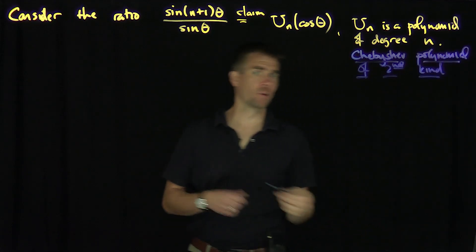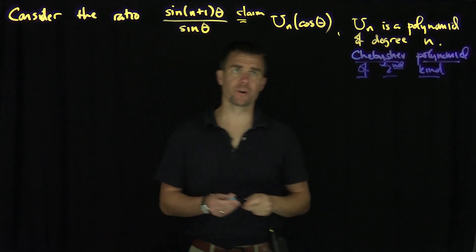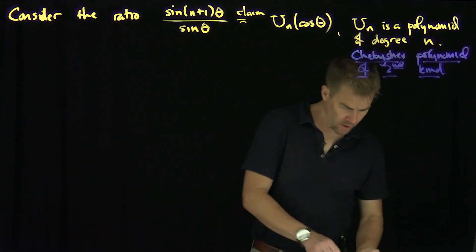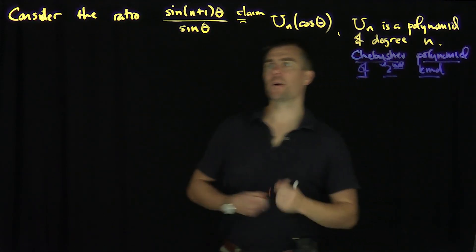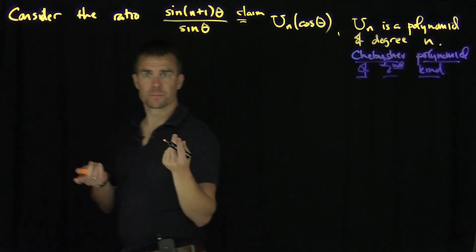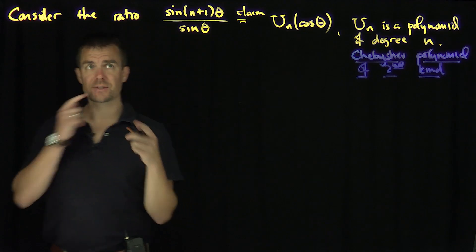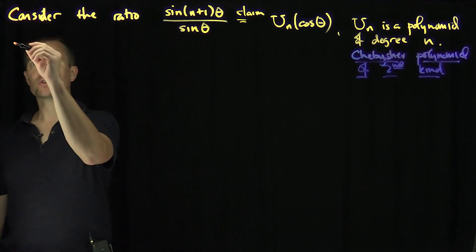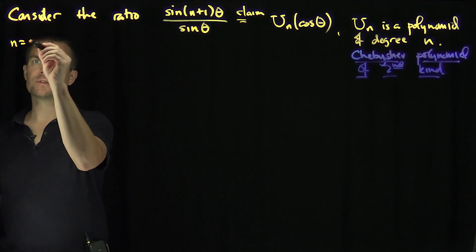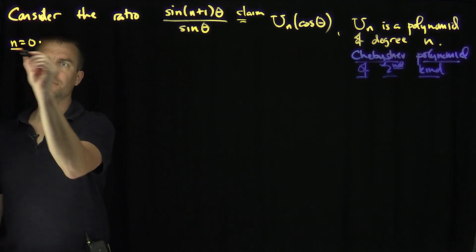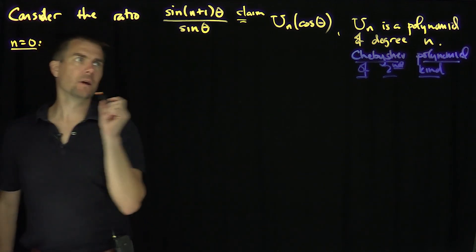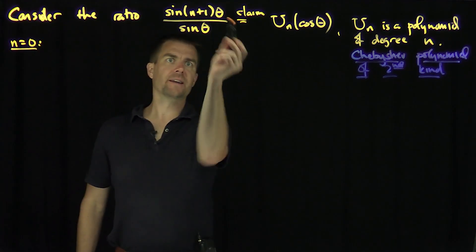We're going to need both these Chebyshev polynomials in approximation theory. So let's do some simple examples of this — let's see how it works. When n is equal to zero, what do we get?